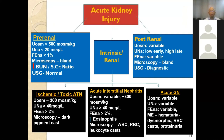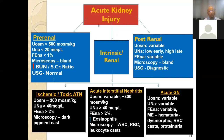In a summary of AKI causes and investigations: in pre-renal cause, urinary osmolality is more than 500 milliosmol/kg, urinary sodium is less than 20 mEq/L, fractional excretion of sodium is less than 1%, microscopy shows bland RBCs, BUN-to-creatinine ratio is high, and ultrasonography is normal. Sodium is reabsorbed, so urinary sodium will be low.